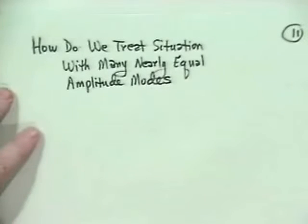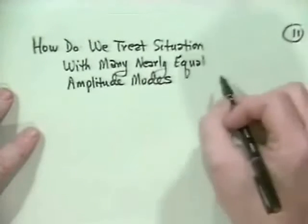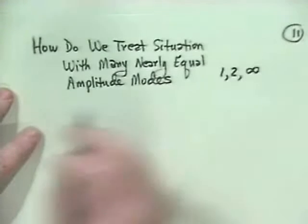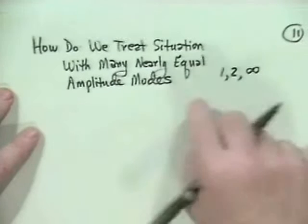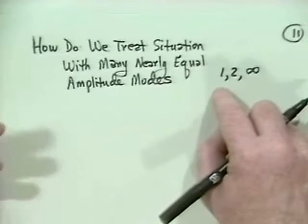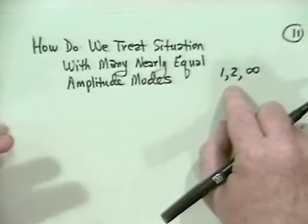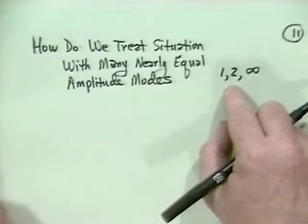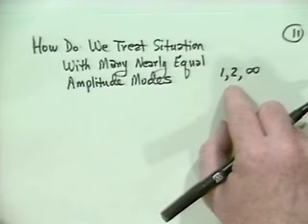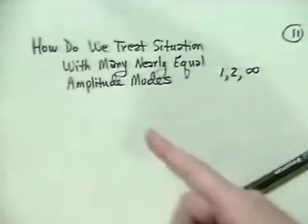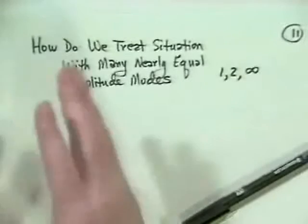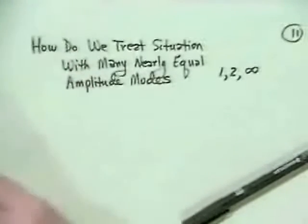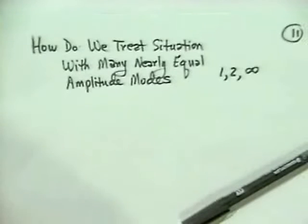And so the question is, how do we treat the situation with many nearly equal amplitude modes? How many is many, by the way, in this case? Well, it turns out you can almost think of it as there's a sort of funny way people describe it. It's called one to infinity. You take one mode and you can do things, okay? Two modes, you can sometimes get their interaction and treat that even nonlinearly.